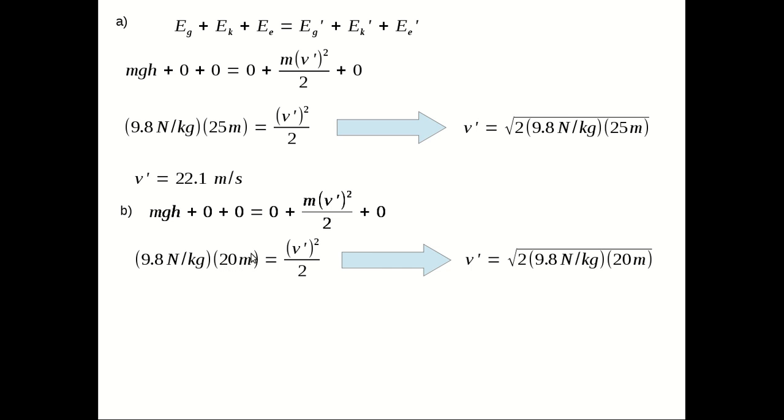So in other words, I've changed the reference point to point B. So at the start, the cars are 20 meters above point B. Again, I've divided by mass on both sides, and I rearrange, and I get v prime by itself, and I get it to be 19.8 meters per second.